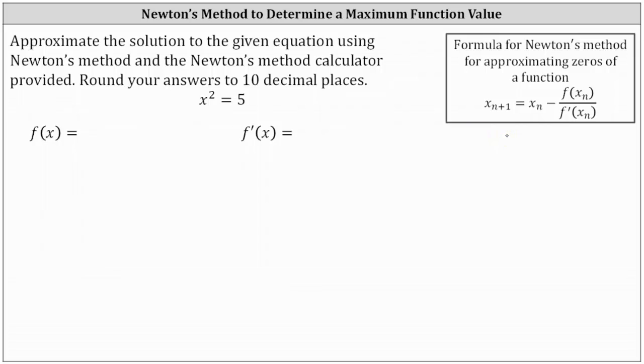We need to write a function where the zeros or x-intercepts would be the solutions to the equation, which means we need to set this equation equal to zero. Notice if we subtract five on both sides we have x squared minus five equals zero, and therefore when using Newton's method we will use the function x squared minus five.